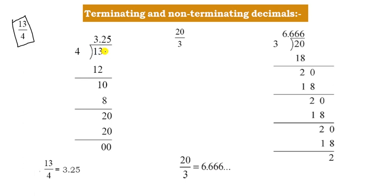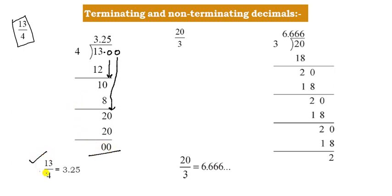After the decimal point, we write 0. Four 2s are 8. Subtracting, we get 2. Bring down 0. Four 5s are 20. It divides completely, so that is a Terminating Decimal. This is called a Terminating Decimal.